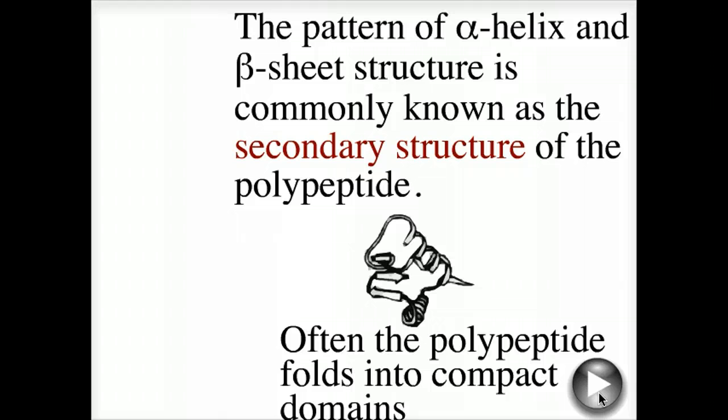The pattern of alpha helix and beta sheet structure in a polypeptide is commonly known as the secondary structure of the polypeptide. Often the polypeptide then folds into compact domains.